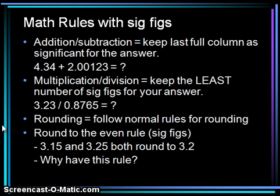For multiplication and division, we keep the least number of significant figures for the answer. 3.23 divided by 0.8765 gives 3.685111238 on a calculator. However, 3.23 has 3 sig figs and 0.8765 has 4 sig figs, so our answer should be reported to 3 sig figs: we report 3.69.